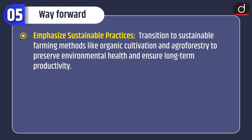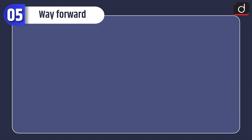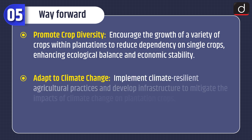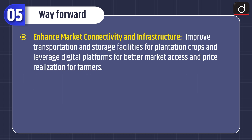Way Forward: Emphasize sustainable practices — transition to sustainable farming methods like organic cultivation and agroforestry to preserve environmental health and ensure long-term productivity. Boost research and innovation — invest in developing resilient crop varieties and improve cultivation techniques adapting to changing environmental conditions. Promote crop diversity — encourage a variety of crops within plantations to reduce dependency on single crops, enhancing ecological balance and economic stability. Adapt to climate change — implement climate-resilient agricultural practices and develop infrastructure to mitigate impacts. Enhance market connectivity and infrastructure — improve transportation and storage facilities and leverage digital platforms for better market access and price realization for farmers.